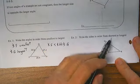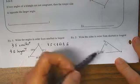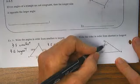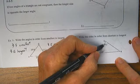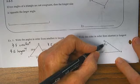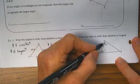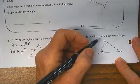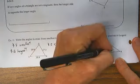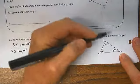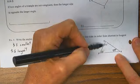Write the sides in order from shortest to longest. Well, it would be easier if we knew the measure of this angle. 60 plus 72 is 132. 180 minus 132 is 48. Am I correct?